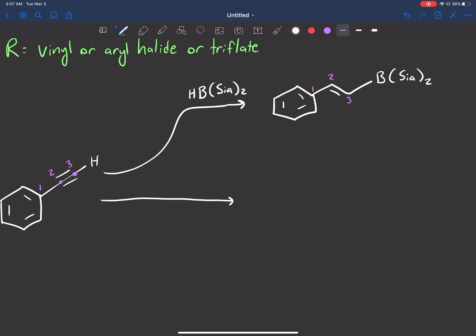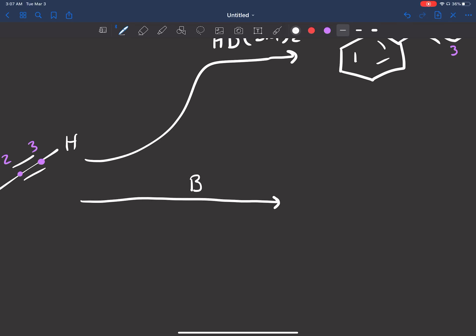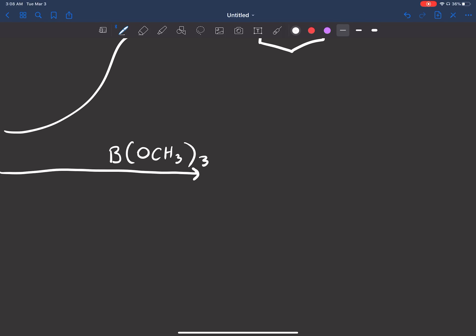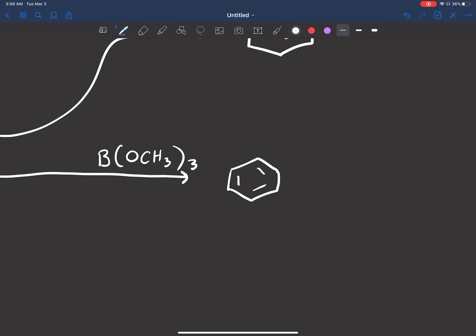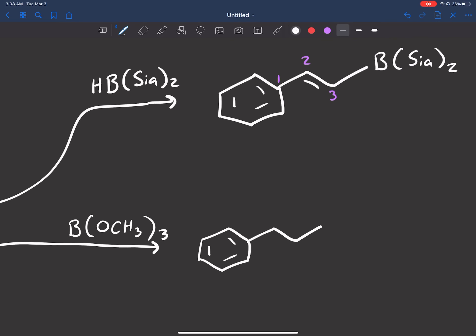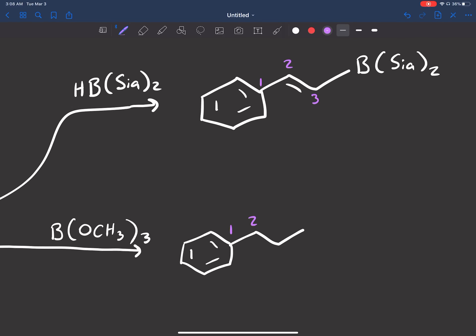The other version is this: boron with this OCH3 group, and I'll put three of them. So this, again, is another compound we can use.